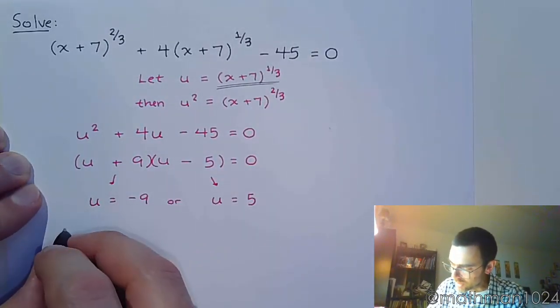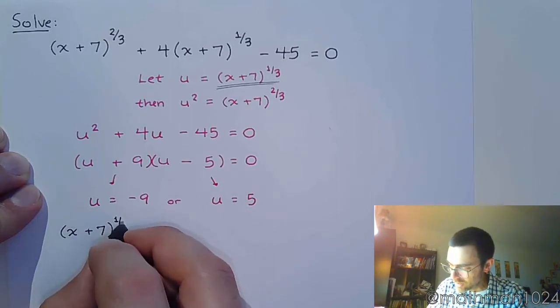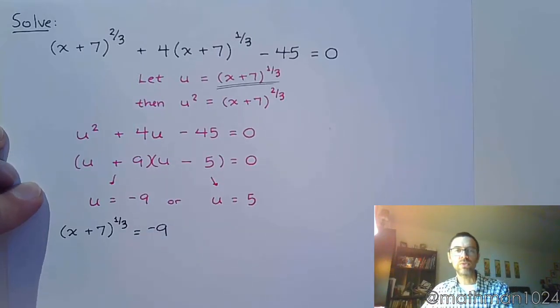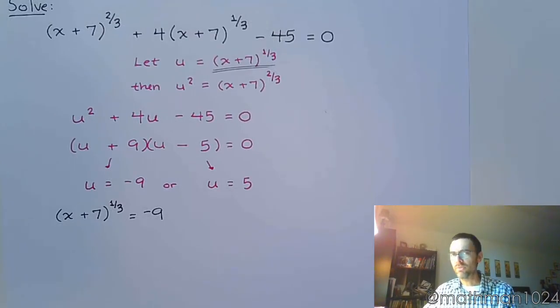So now I'm going to replace this and say x plus 7 to the 1/3 equals negative 9. And I'm going to solve that equation. I'm not solving for u, I'm solving for x because that was the original variable.